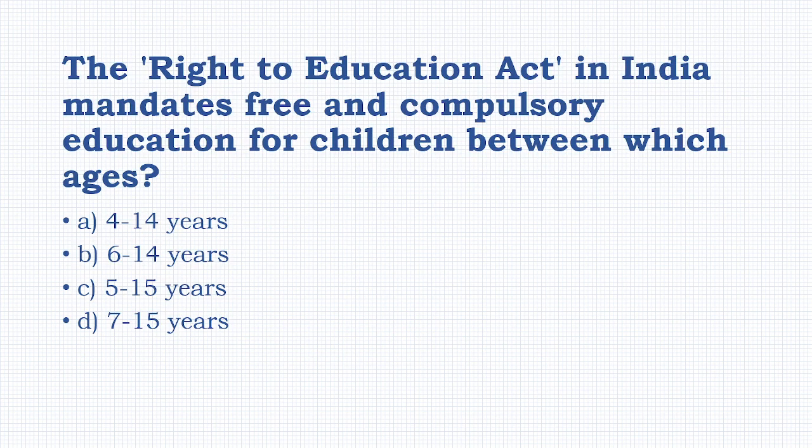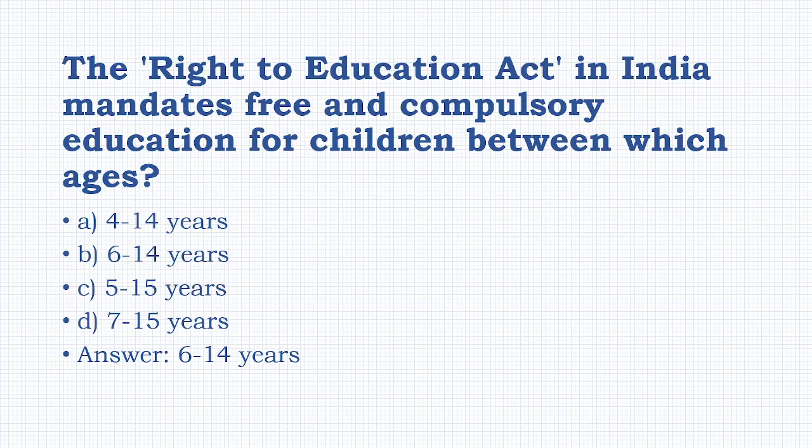The Right to Education Act in India mandates free and compulsory education for children between which age group? Options: 4 to 14 years, 6 to 14 years, 5 to 14 years, 7 to 15 years. The answer is: 6 to 14 years.